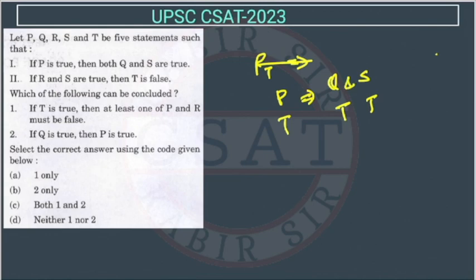Second, if R and S are true, so if R is true and S is also true, both are true, then what will happen? Then T is false.